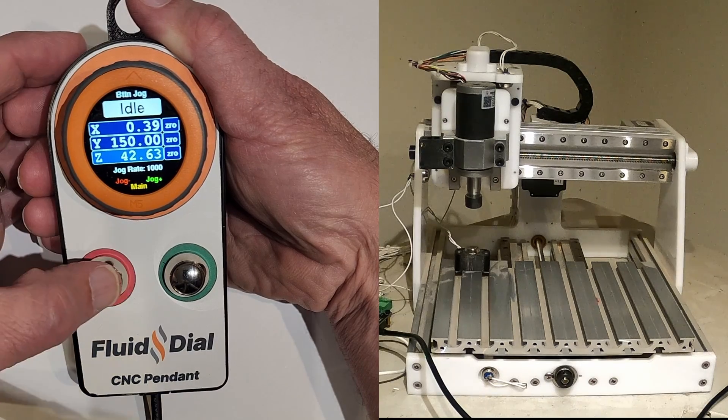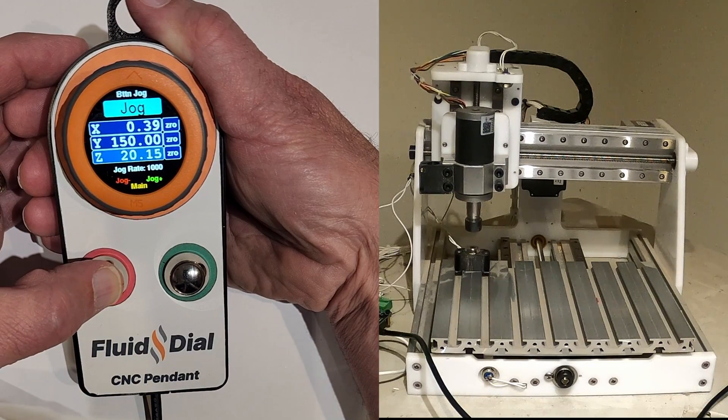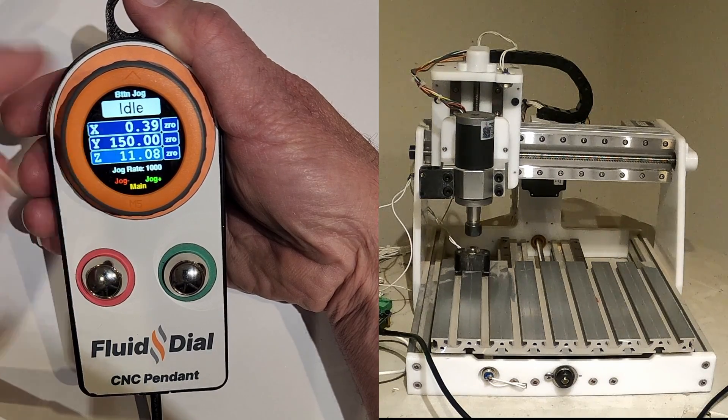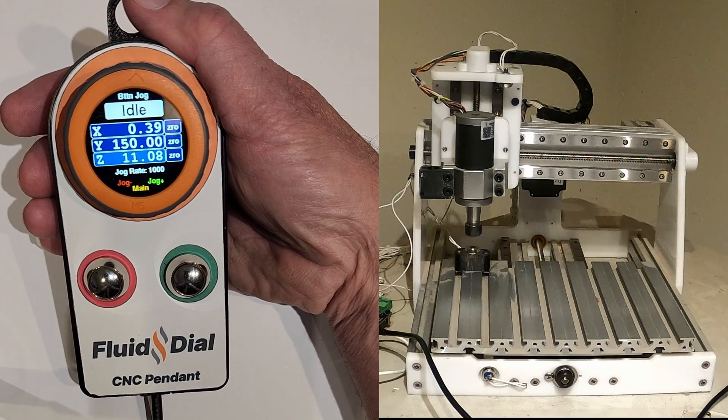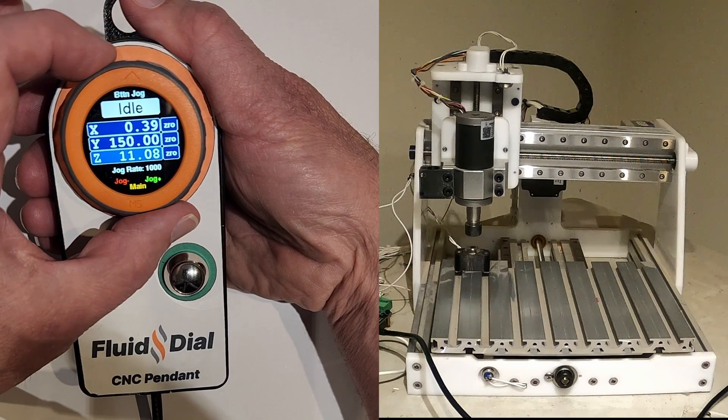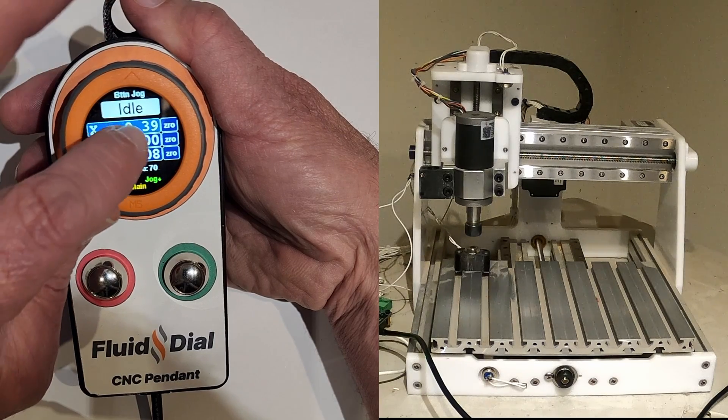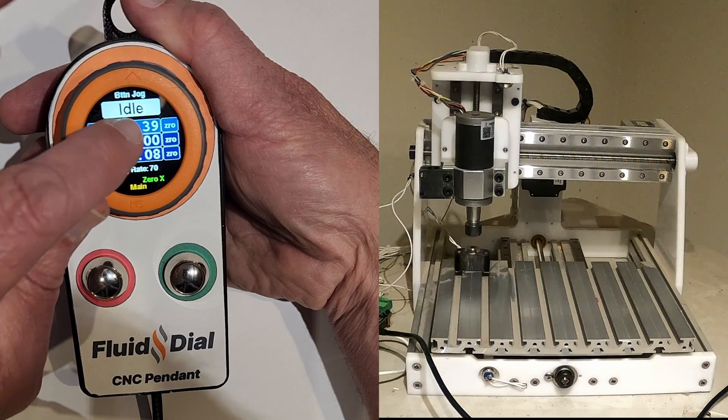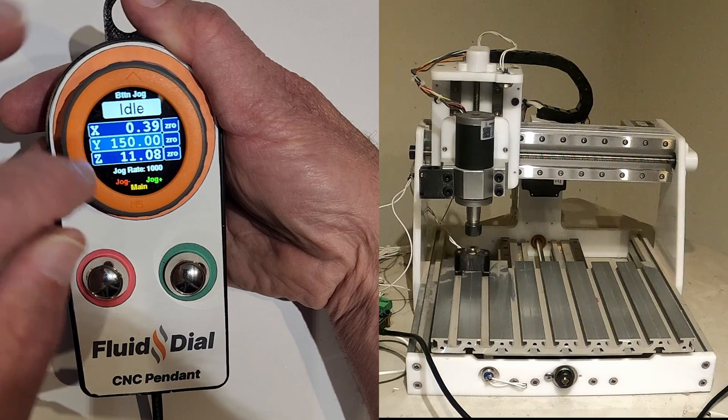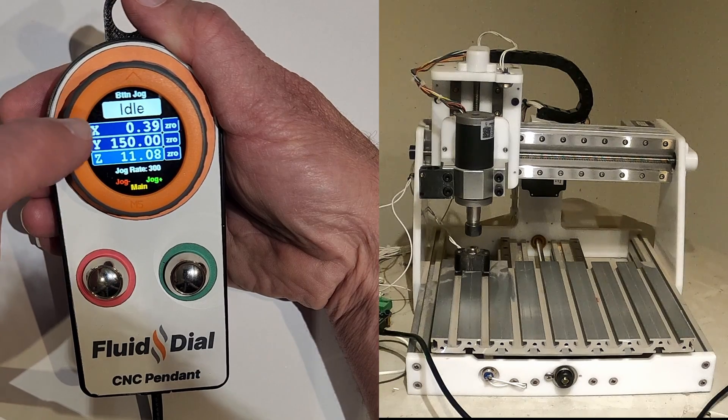I'm going to move the Z down a little. The other thing is it remembers each jog rate for each axis. So if I slow this one down and then change, you'll see that the jog rate is changing for each axis.